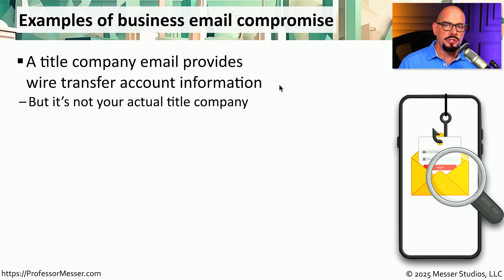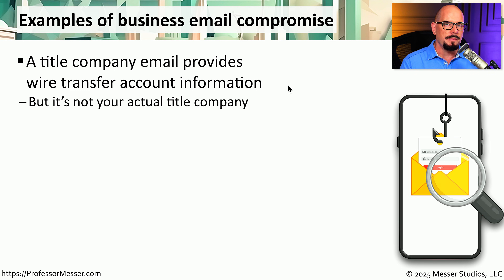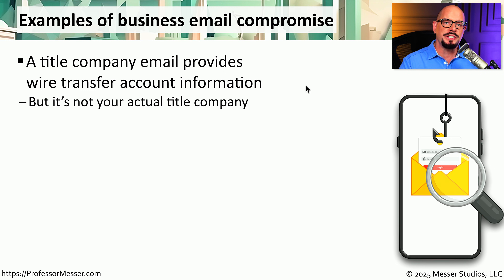One of these examples had a user receiving an email from their title company while they were in the middle of closing on some real estate. Although this email seemed to be from their title company, in reality it was being sent from an attacker making the email appear as if it was from this title company, and this email message contained wire information on where they should send their funds for the closing of this real estate. Of course, everything in this email message was false, and the wire transfer sent money to the attackers rather than sending it to the title company.